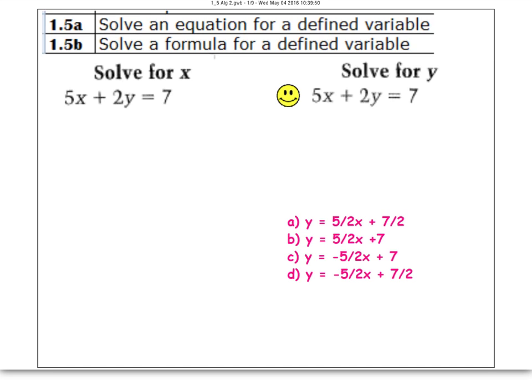This first one, let's take 5x plus 2y equals 7 and solve for x. So I'm going to look at the x value which is right there. My goal is to isolate x and get it by itself. To do that I have to get rid of the 5 and I have to get rid of the 2y.